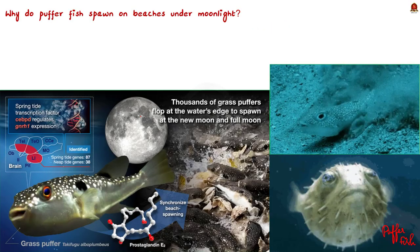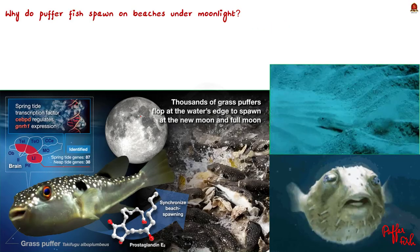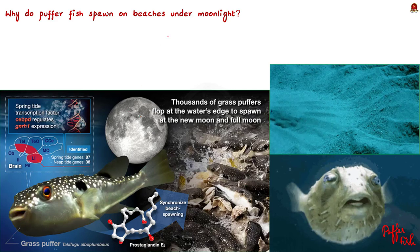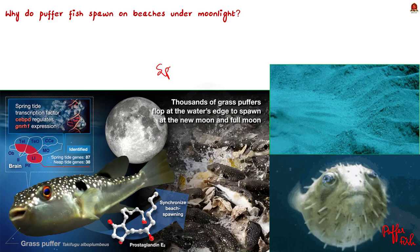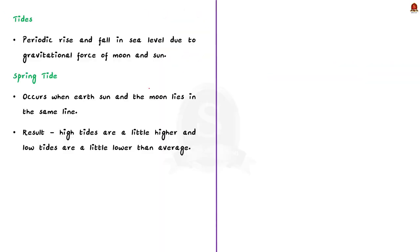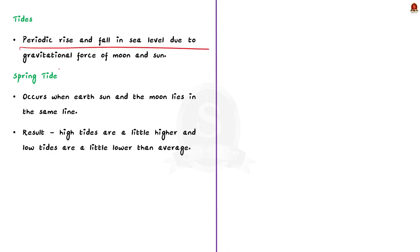While discussing the behavior of puffer fish, I mentioned that puffer fish normally spawn along the coast at night during spring tide. What are spring tides? First of all, tides are a periodic rise and fall in sea level due to the gravitational force exerted by the moon and the sun.